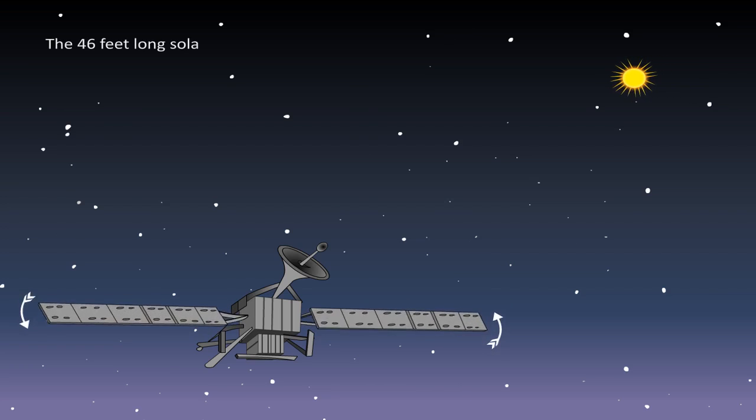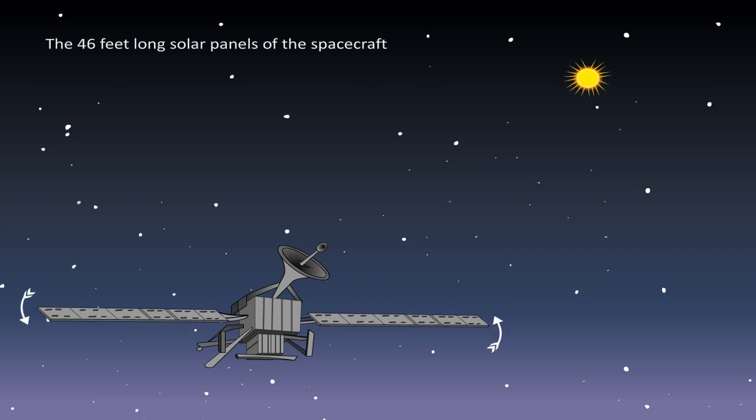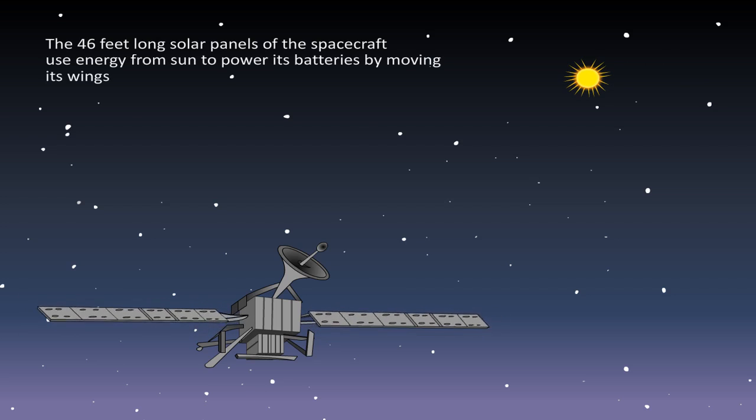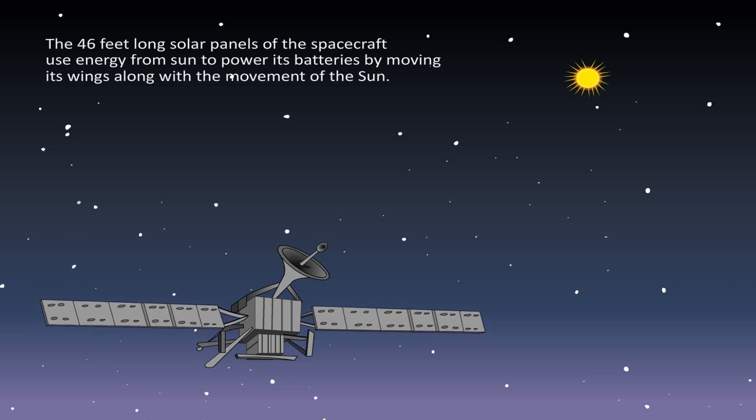The 46 feet long solar panels of the spacecraft use energy from the Sun to power its batteries by moving its wings along with the movement of the Sun.